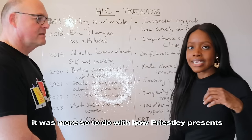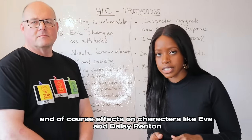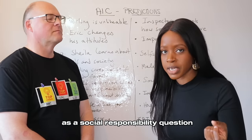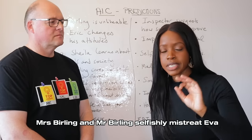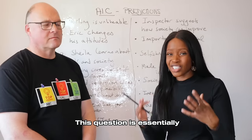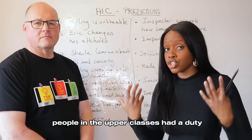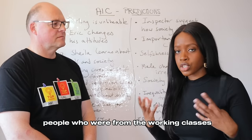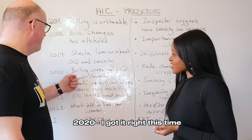For the 2019 theme question, it was about how Priestley presents selfishness and its effects on other people — effects on society and on characters like Eva and Daisy Renton. I see this as essentially a social responsibility question: how characters like Sheila, Gerald, Eric, Mrs. Birling, and Mr. Birling selfishly mistreat Eva and selfishly keep profits to themselves. As long as you argue that Priestley's message is that people in the upper classes had a duty — not a choice, but a duty — to help and empower people from the working classes, you'll do really well.